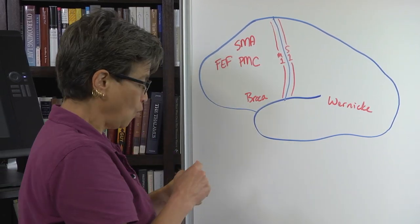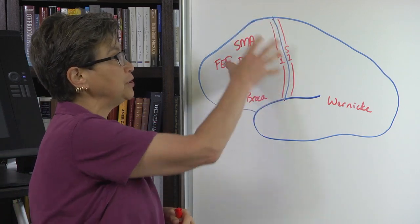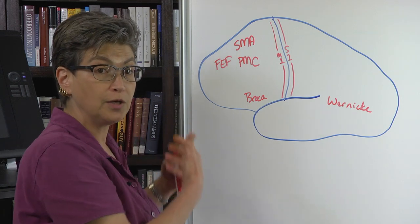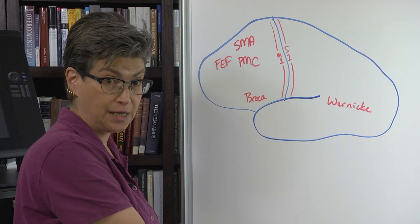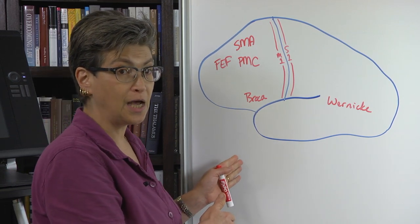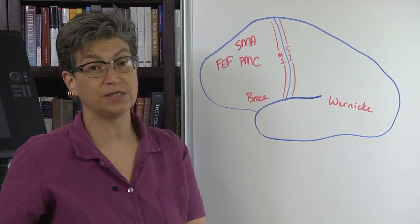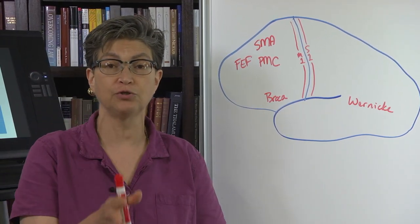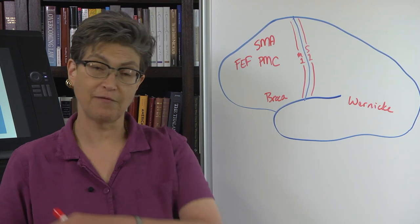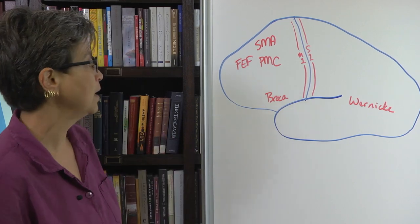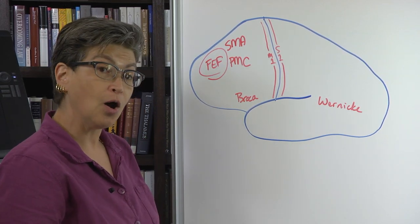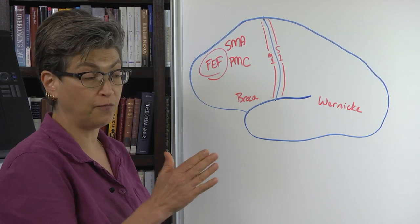If you had a complete lesion of the motor strip, you would lose the ability to move the face, arm, and hands on the other side, and also the ability to look to the other side. Because you lose the ability to look to the other side, at rest your eyes will be deviated toward the same side as the lesion. So if someone is looking to the side rather than straight ahead, that is the side of the lesion. Understanding resting gaze is a very useful cue for figuring out which side a lesion is on.